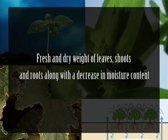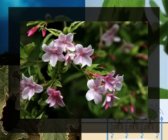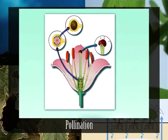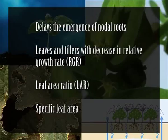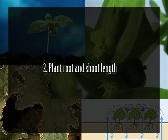Shoot and root growth decrease along with moisture content, but the degree of decrease in growth characteristics varies from species to species. Several aspects of reproductive growth — including flowering, pollination, fruit development, yield, and quality — are also influenced by salinity. High salinity stress delays the emergence of nodal roots, leaves, and tillers, with decreases in relative growth rate (RGR), leaf area ratio (LAR), and specific leaf area. Stomatal conductance, leaf-level transpiration, and internal carbon dioxide concentrations decrease at high salinity, along with senescence. Salinity also inhibits cell expansion; however, the precise contribution of these processes to inhibition of cell division and acceleration of cell death has not been well elucidated.